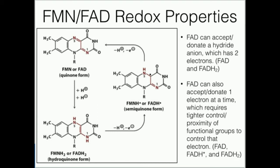We can also do a stepwise process of transferring one electron at a time. Starting with FMNH2 or FADH2, we transfer one electron to get to the FADH radical, or semiquinone form, and then transfer another electron to get back to the FAD quinone form. Again, it all depends on the mechanism of the enzyme, but the versatility in flavins allows some pretty cool chemistry, including radical chemistry, as you can see here in the FADH semiquinone in the middle.